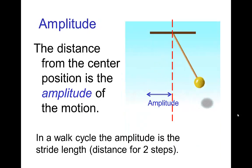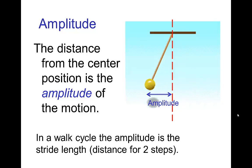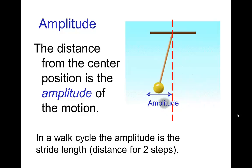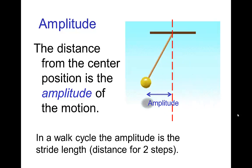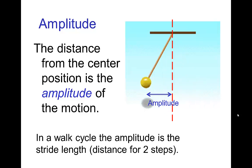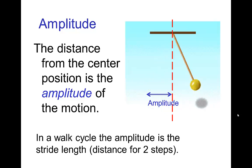The next element is amplitude. When we have cyclic motion, the amplitude is the distance from the center position for the motion. For a walk cycle, we could define the amplitude as the stride length — that's the distance for two steps.